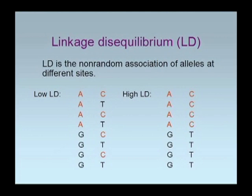Linkage disequilibrium deals with the nonrandom association of alleles at different sites. These two columns represent single nucleotide polymorphisms — some individuals at a particular nucleotide site will have an A, and some will have a G. What we're interested in is that if you have an allele at one site, it can sometimes predict what allele you have at another site.